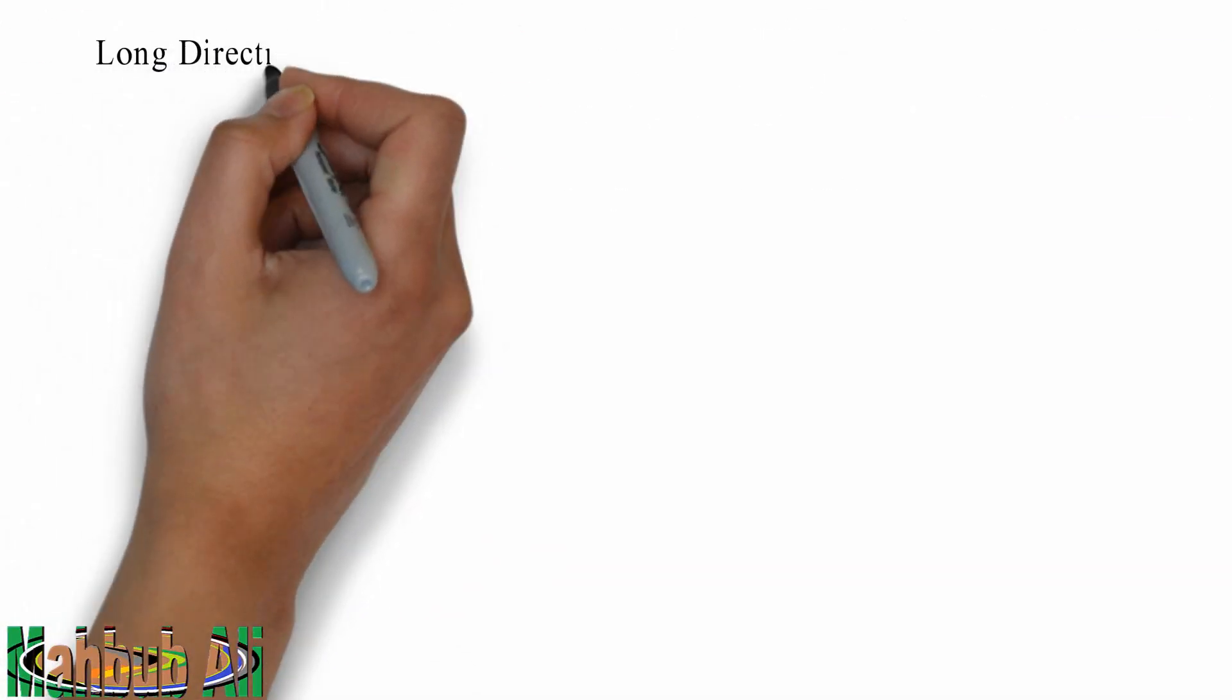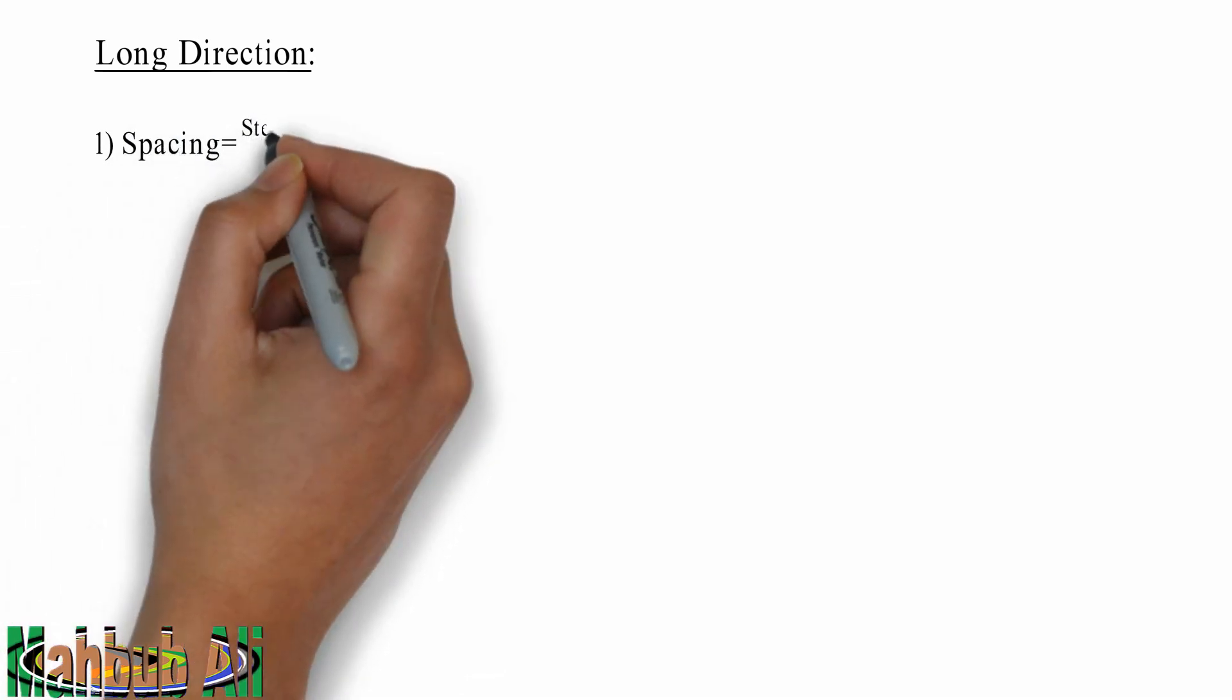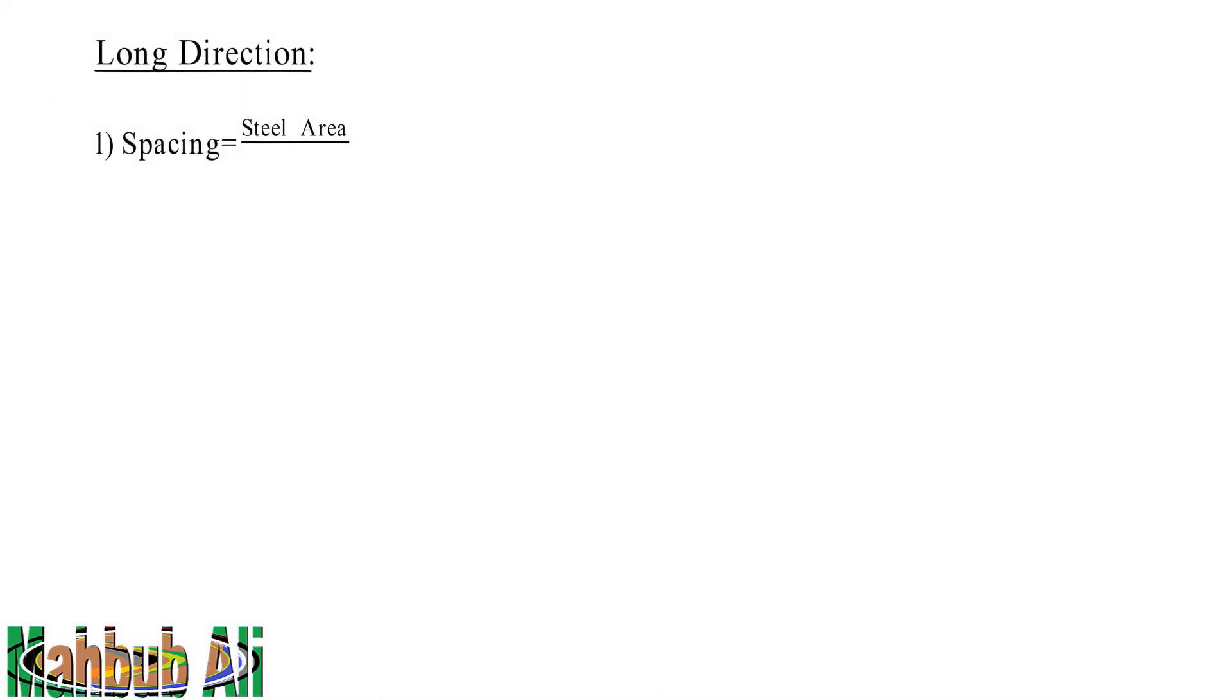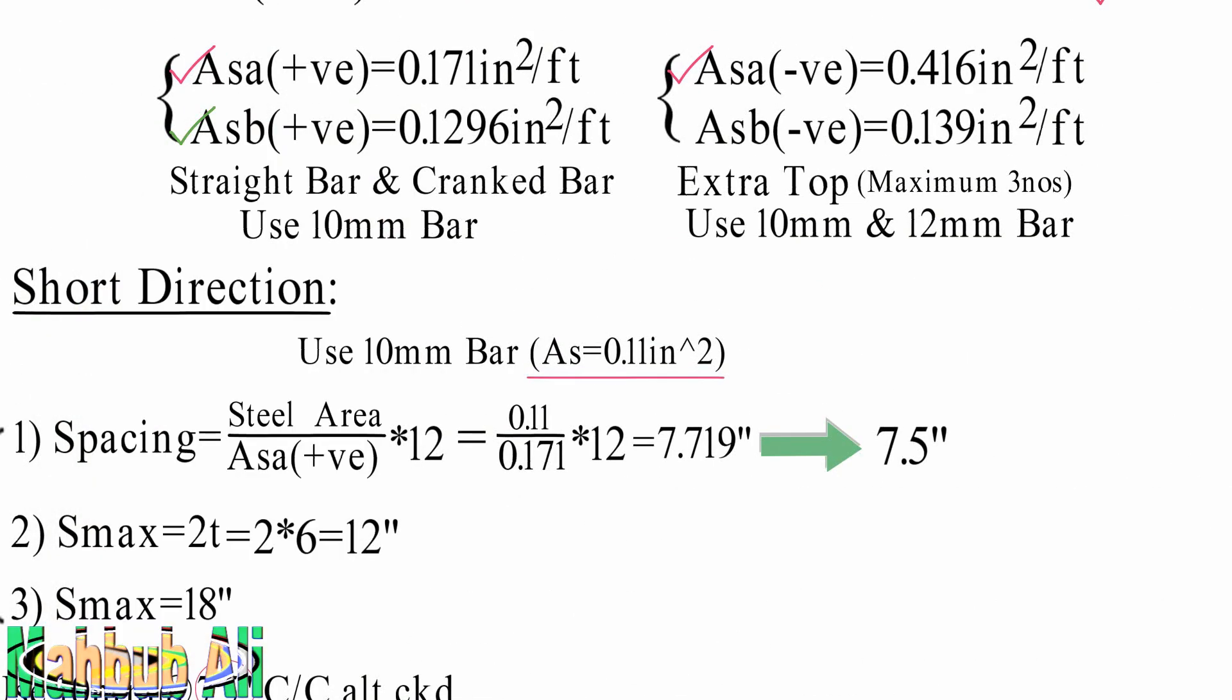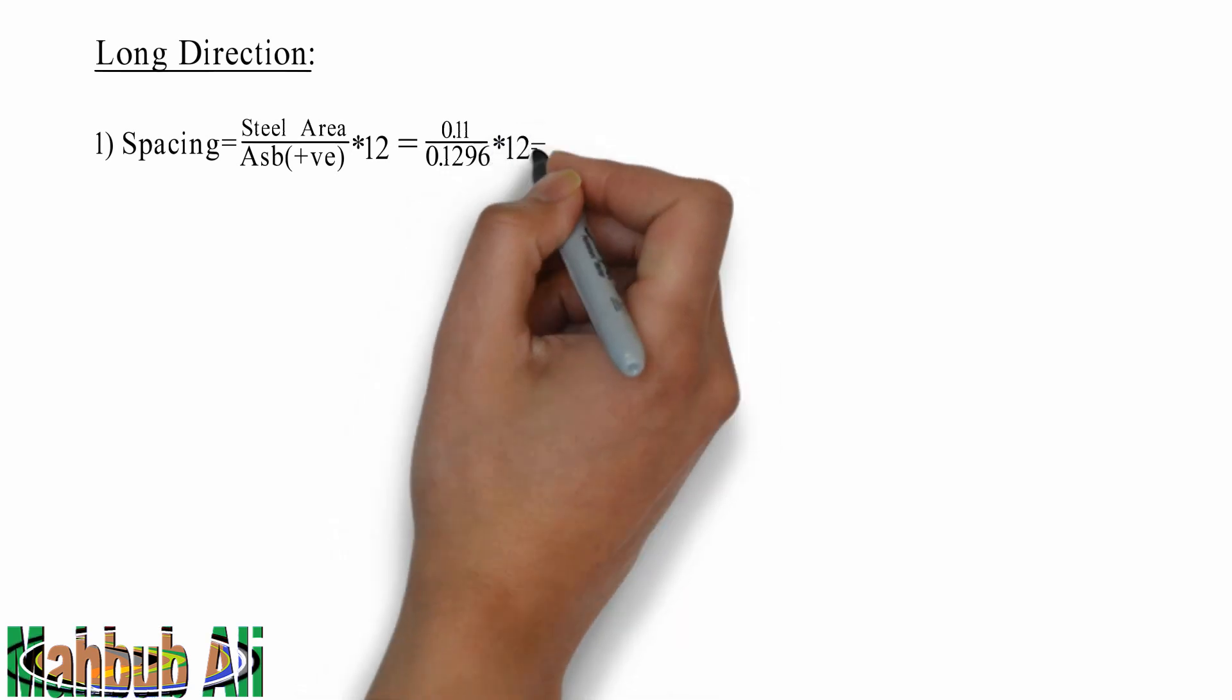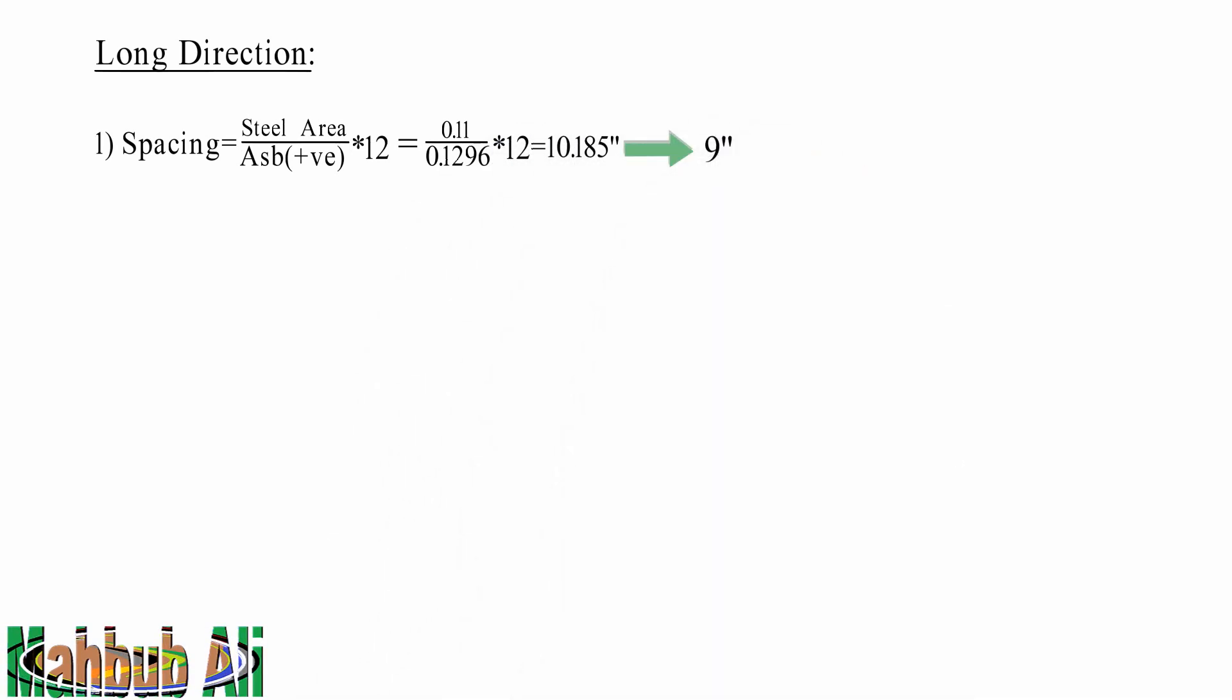Long direction same way we'll calculate. Spacing equals steel area divided by AASB plus V into 12. Same way for long direction we'll use B. For short direction we used A, for long direction we'll use B. Same process. Here 10.185, so we took 9 inch.